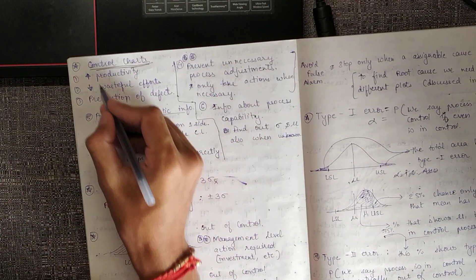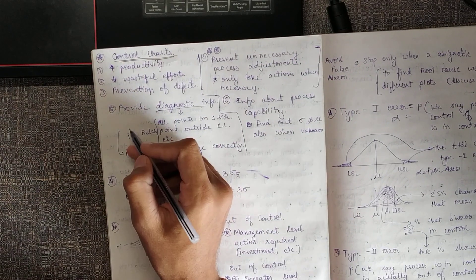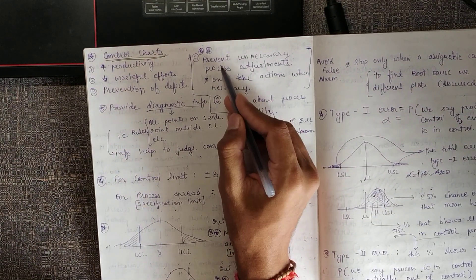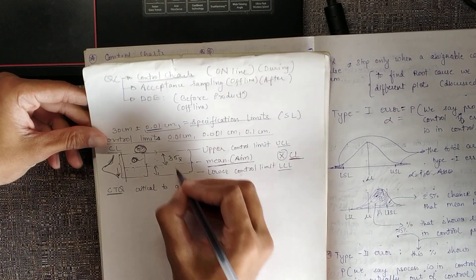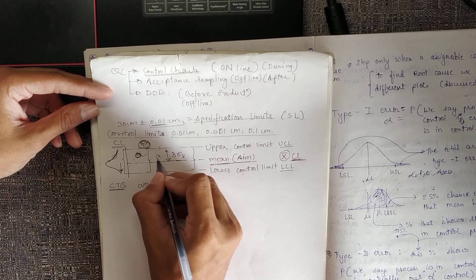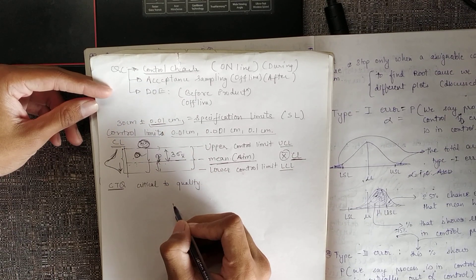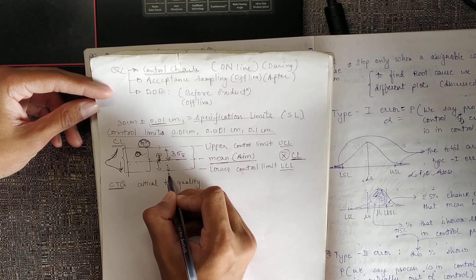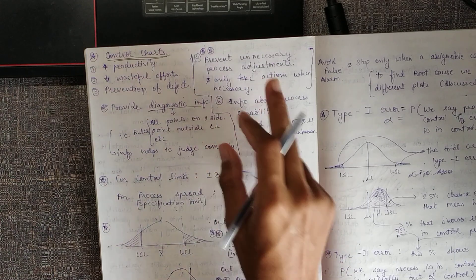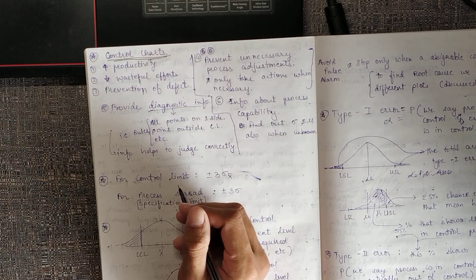Control charts increase productivity because we reduce waste and prevent the generation of defective items. They also prevent unnecessary process adjustments. For example, if a dimension is not at the mean line but still within control limits, one might unnecessarily adjust the process — and that adjustment could push the next point outside the control limit. Studying control limits helps avoid such unnecessary adjustments.